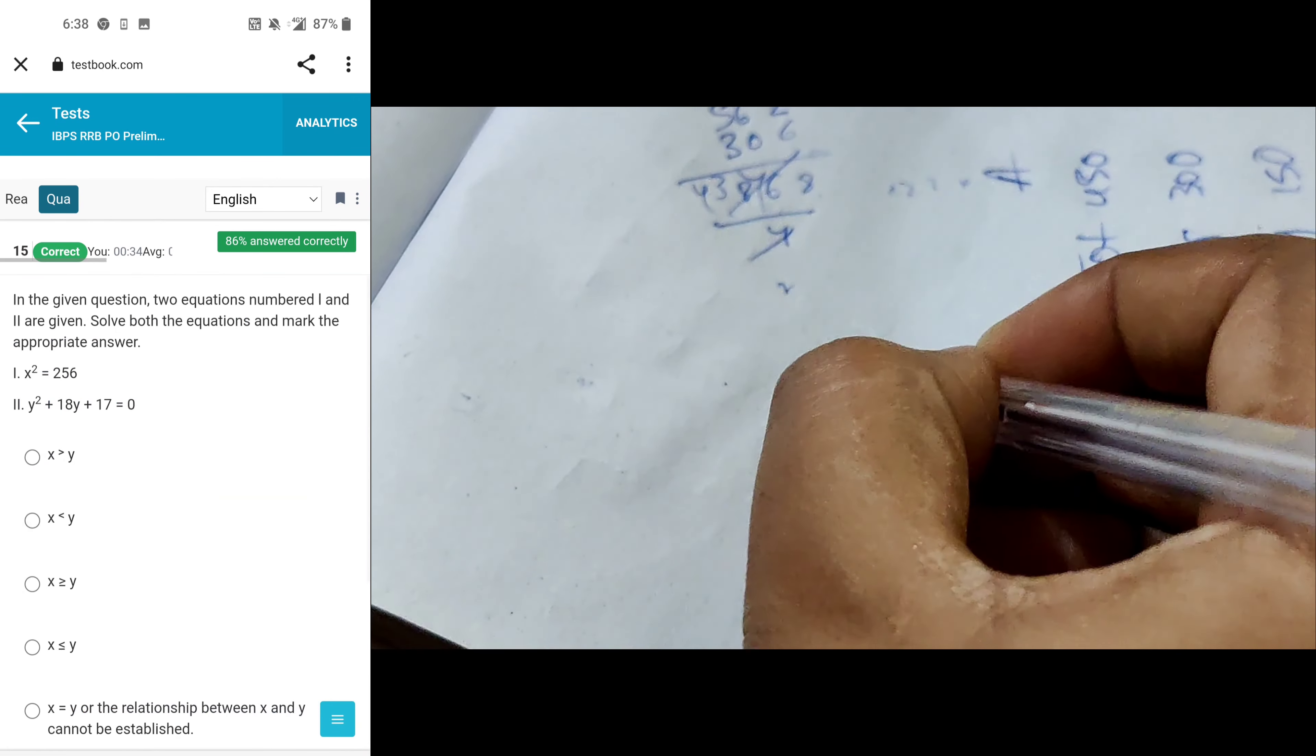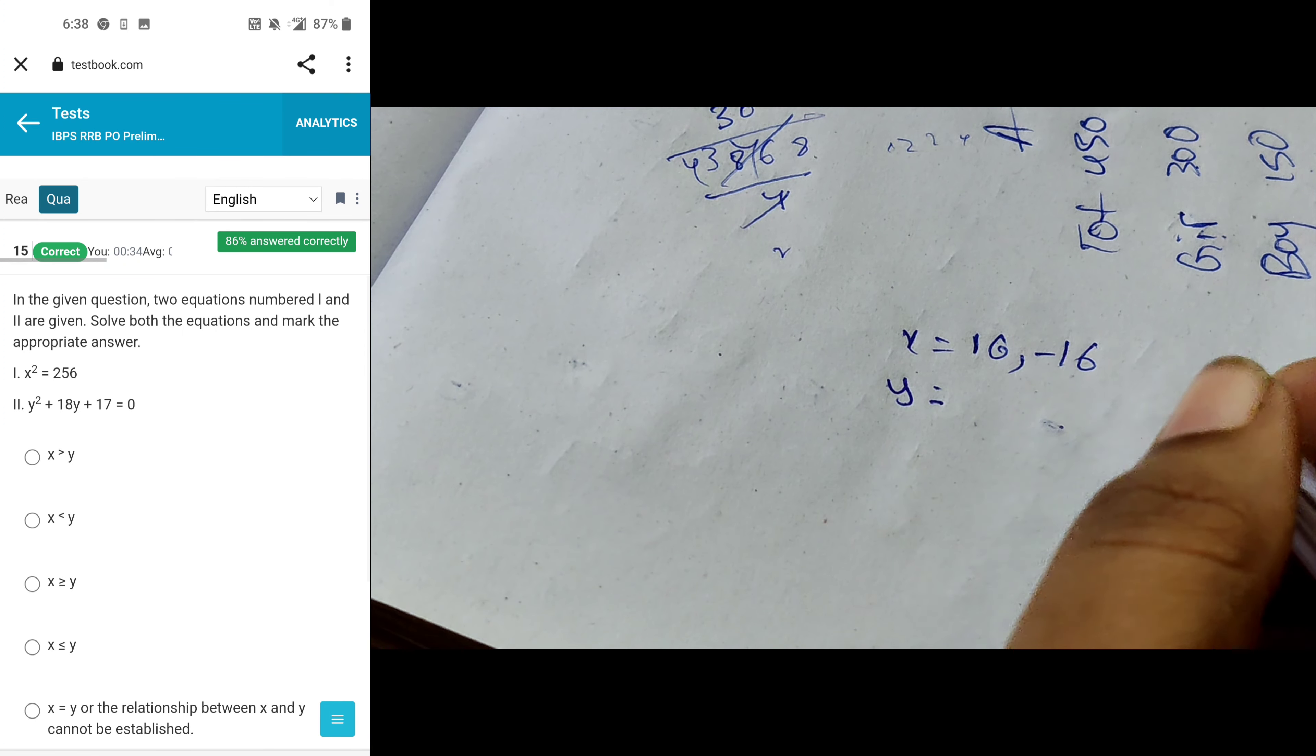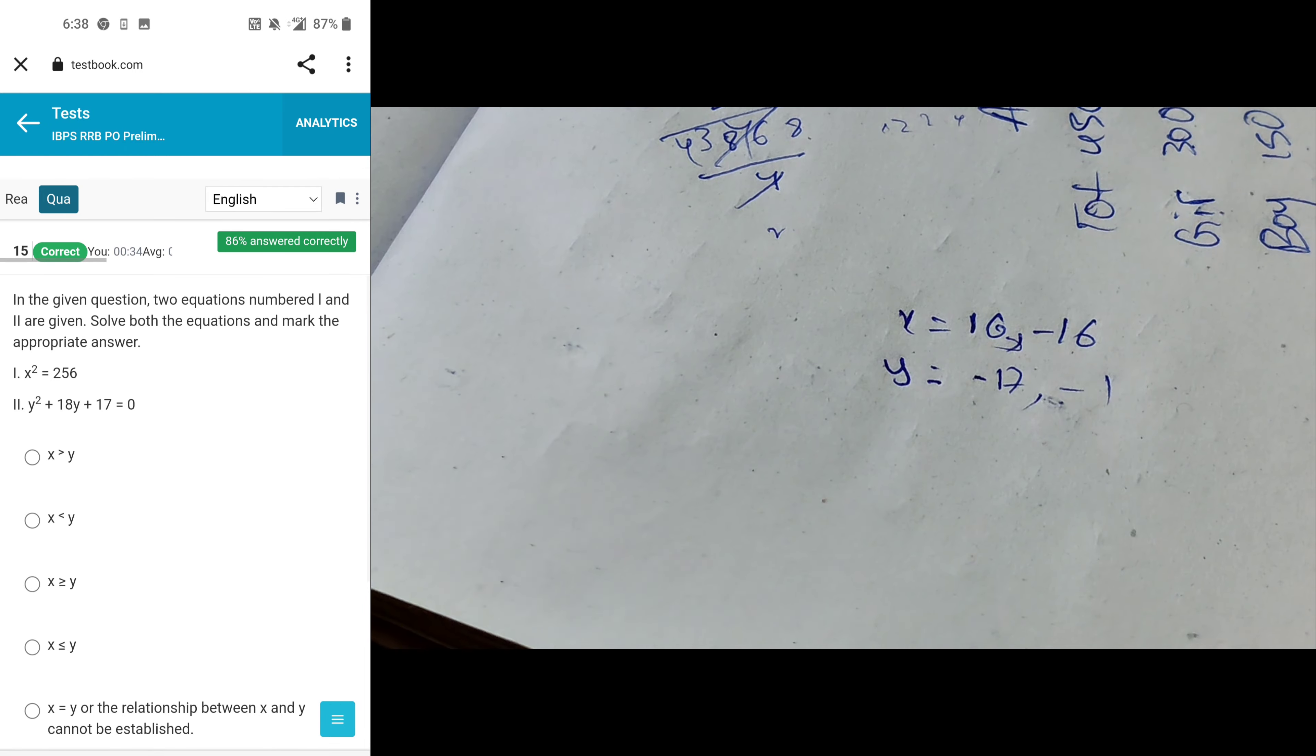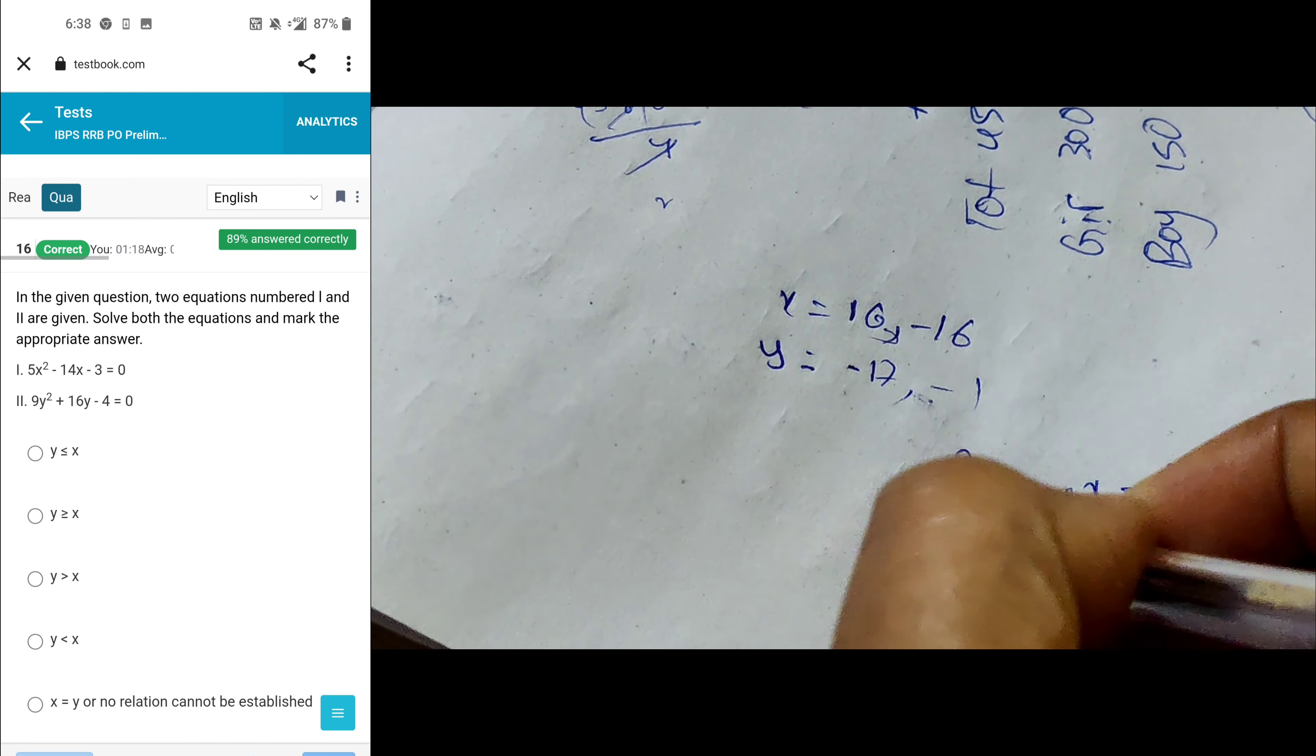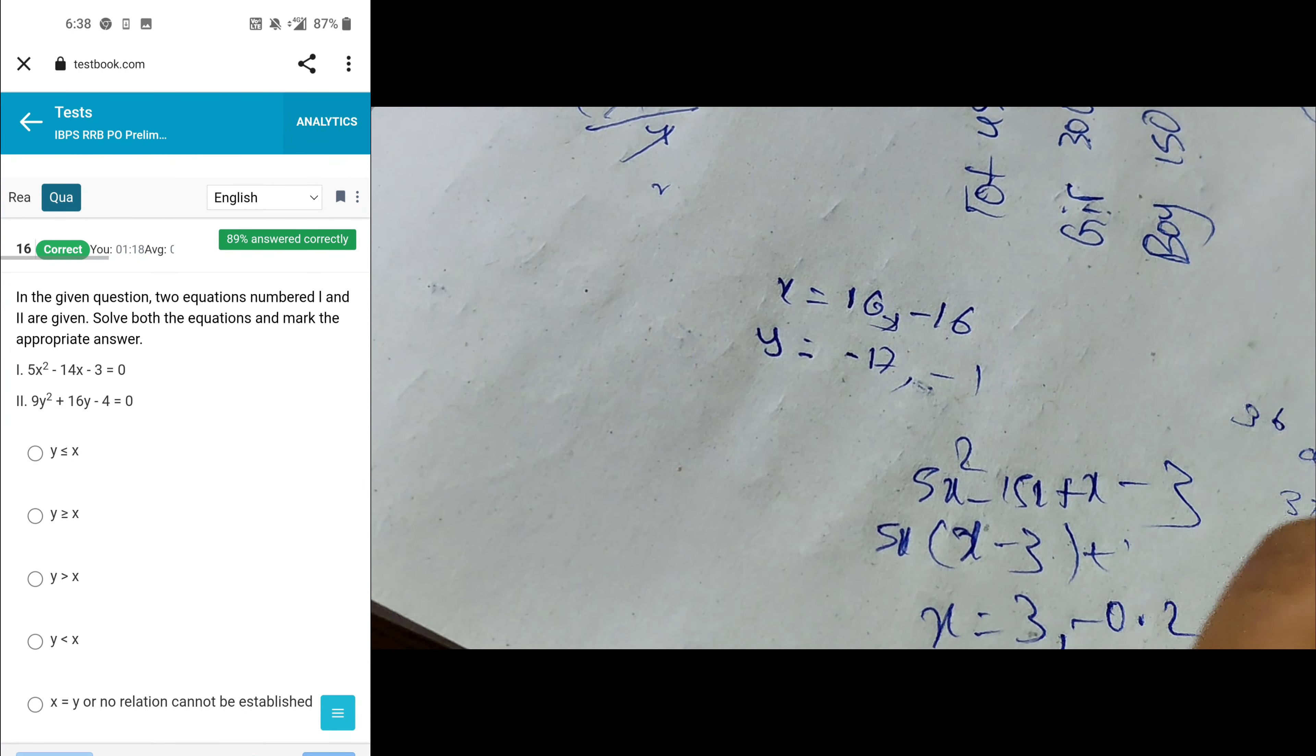Next, simplification - sorry, quadratic equations. x² plus 16 minus 16, and y equals, so 17 means minus 17, minus 1. So x can be determined.